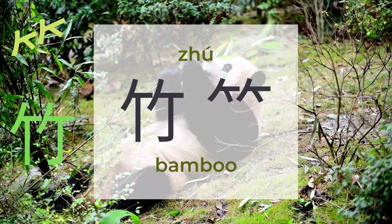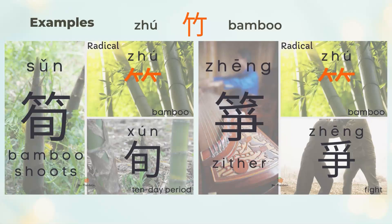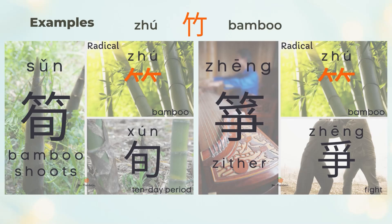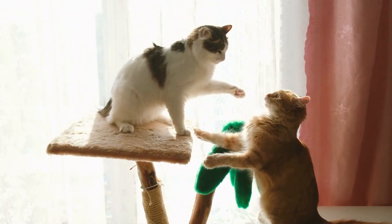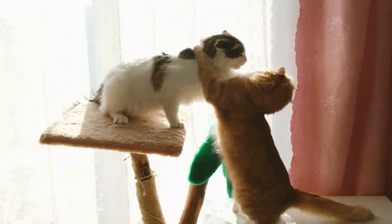笋 means bamboo shoot. 笋 is the top 竹 (bamboo) and the bottom 旬 (ten-day period). 筝 is an ancient Chinese musical instrument. 筝 is the top 竹 (bamboo) and the bottom 争 (to fight or argue). There is a story: some people believe a father gave his two daughters a musical instrument made of bamboo, they fought so hard, and the father divided it into two instruments — that's the origin of 筝.